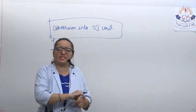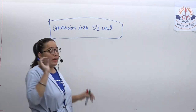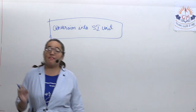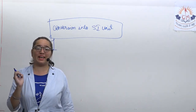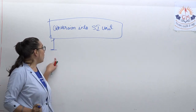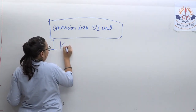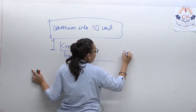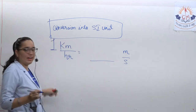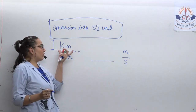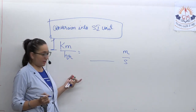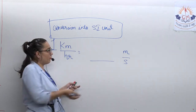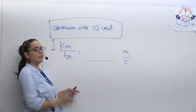Forget about everything else and keep one thing in your brain: you have to convert everything into its SI unit. So, 1 kilometre per hour — we will derive how many metres per second this equals. Every time the question is given in kilometres per hour, we convert it into metres per second.